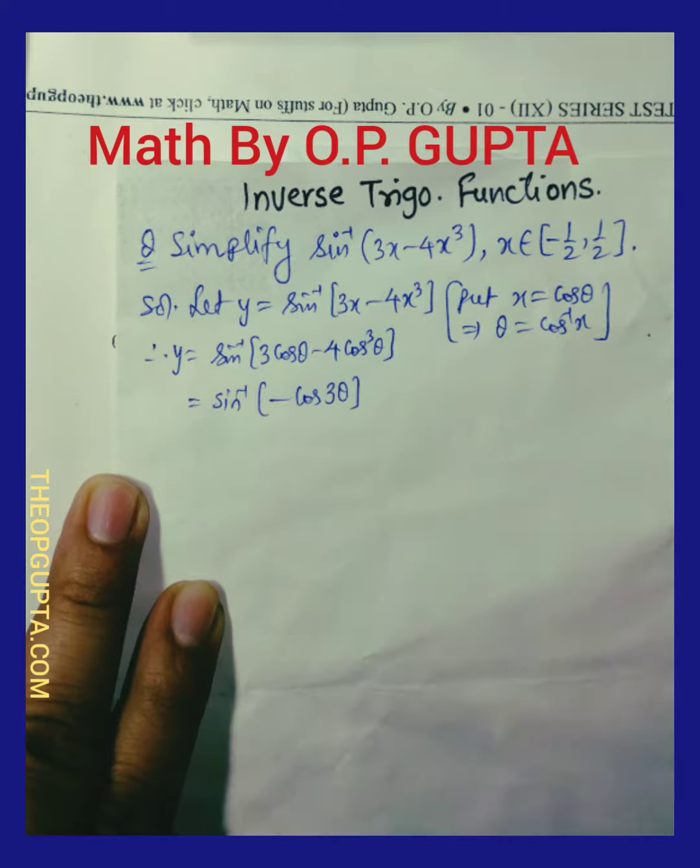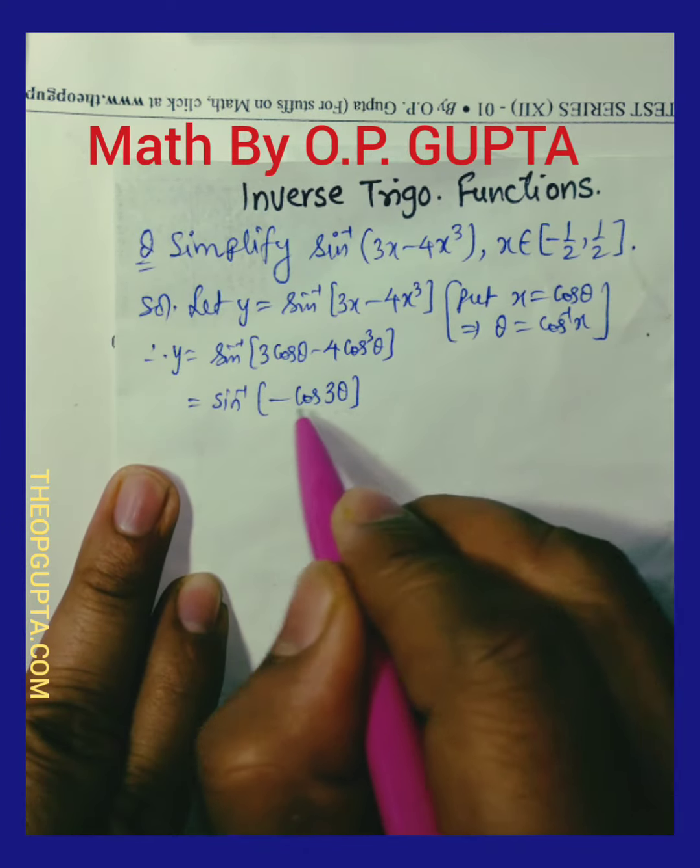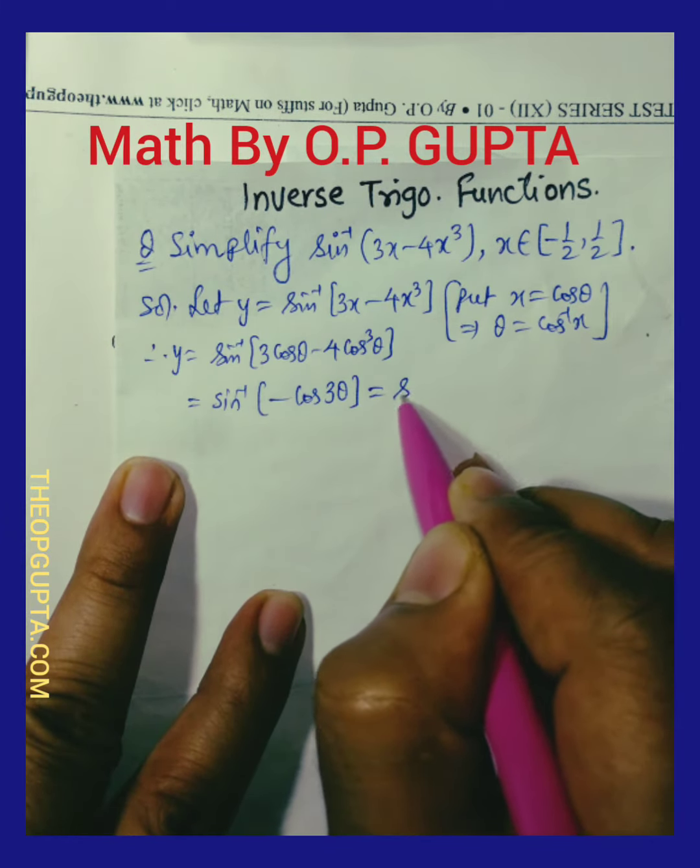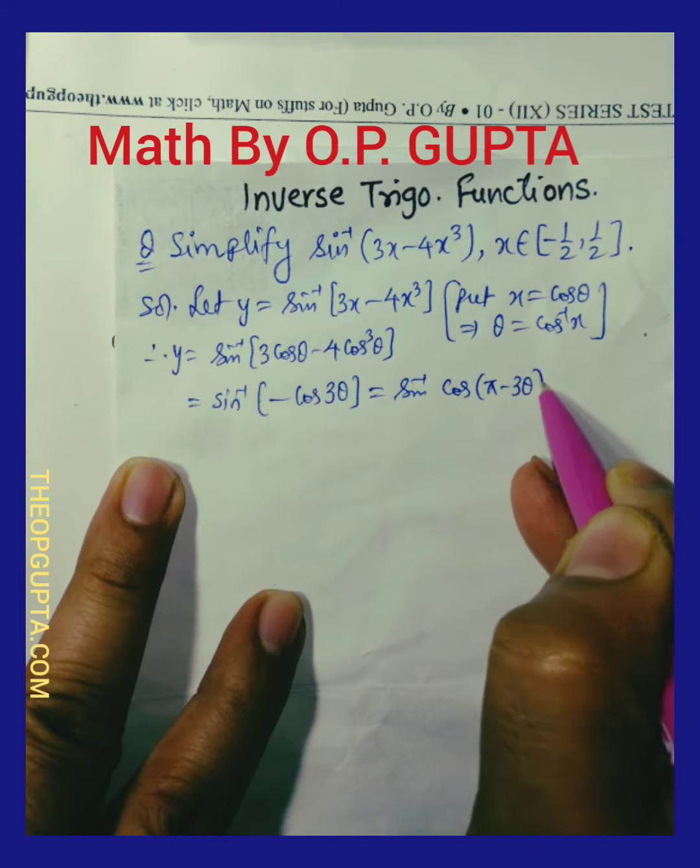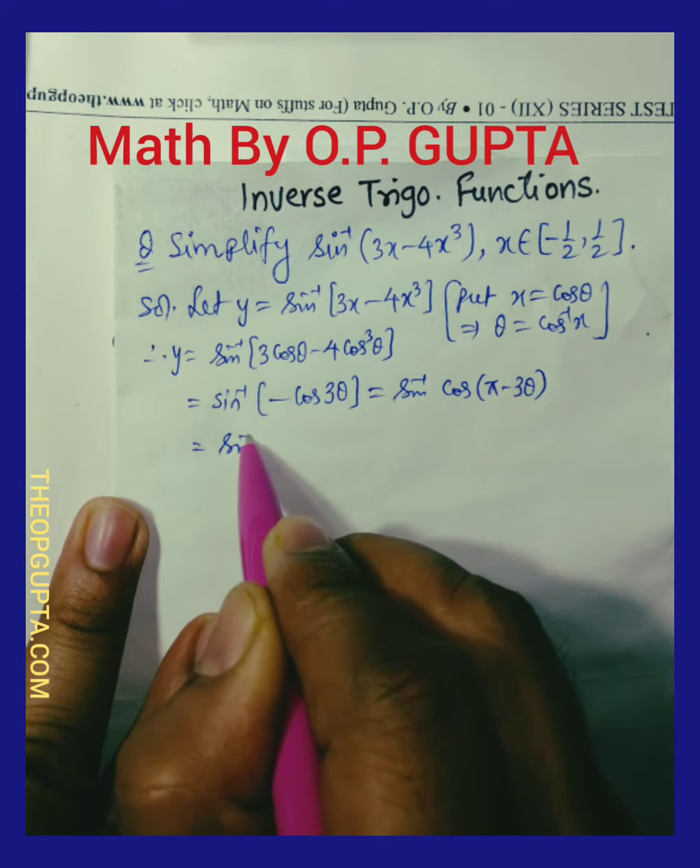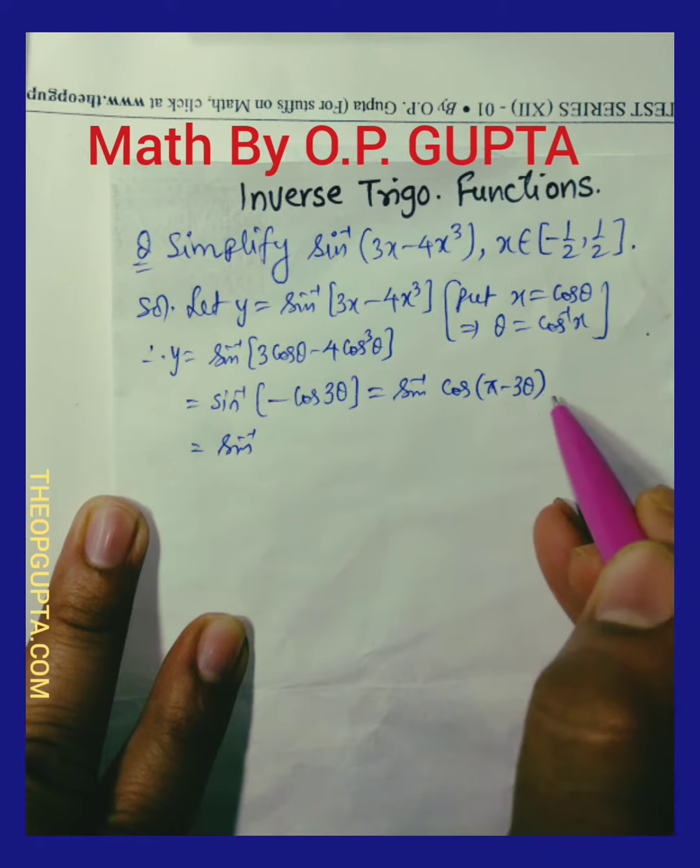Negative cos a is cos pi minus a. So let me write it: sine inverse cos pi minus 3 theta.